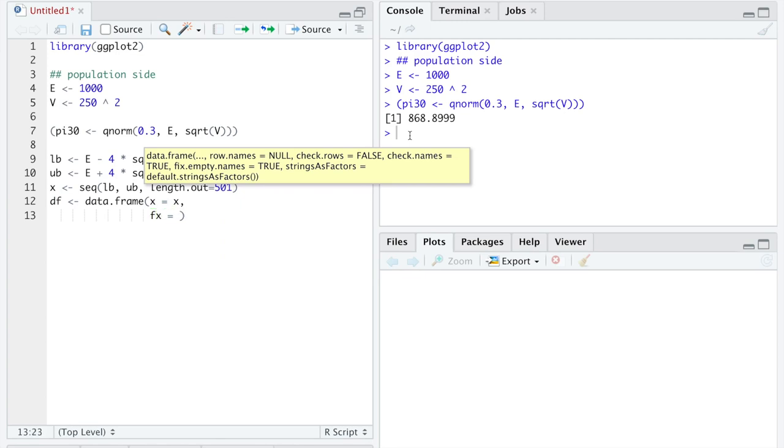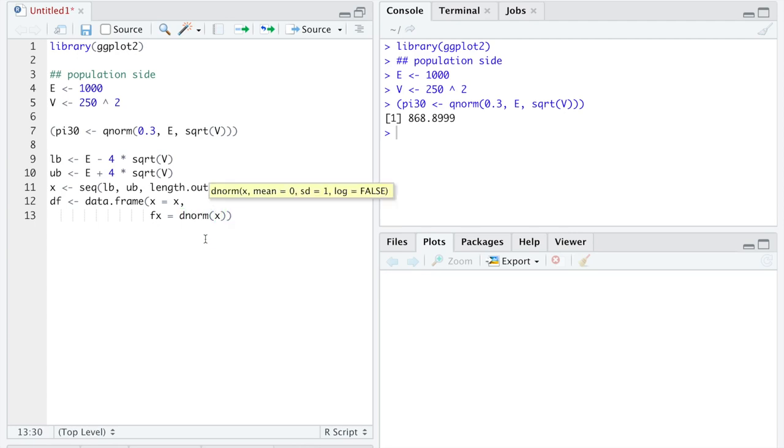Where we recall, since we're on the population side, we can pretend like we know the density function for the population to have mean e, 1,000, and standard deviation, the square root of v, or 250.